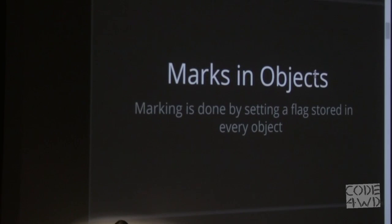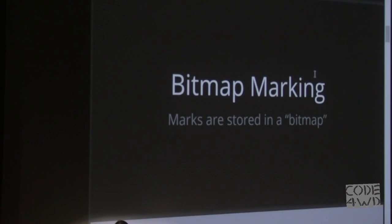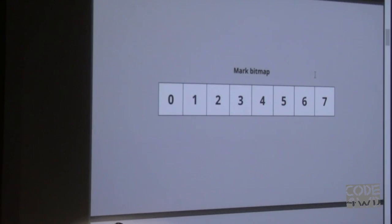There are two ways to do marking. One is where every object has a flag — typically a boolean — that you set to true when you mark it, indicating the object has been marked. The second approach is bitmap marking, a technique that Ruby's garbage collector recently adopted. You have a bitmap structure, which is essentially an array, and every object has an index in that array. When you mark it, instead of writing a flag directly to the object, you figure out the index and set that one to true.